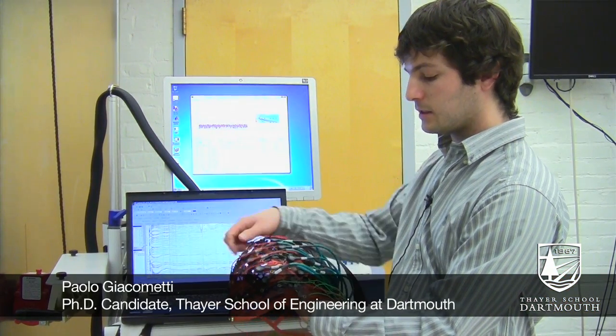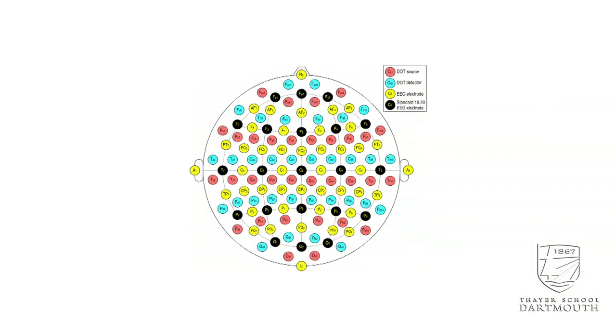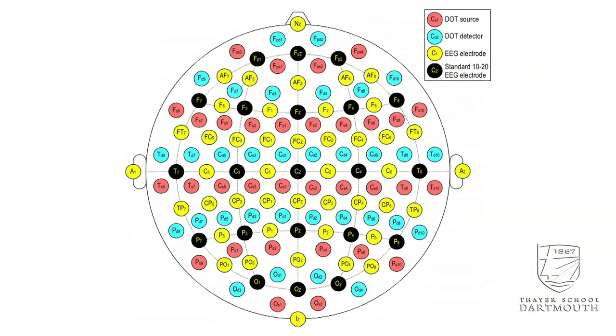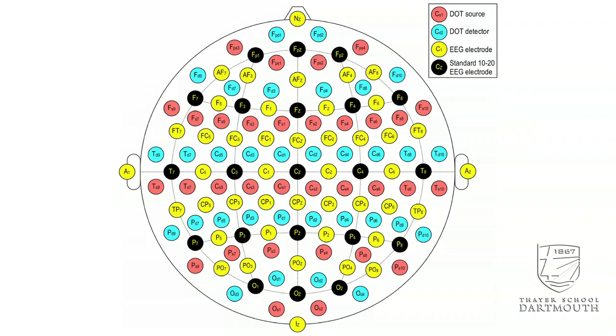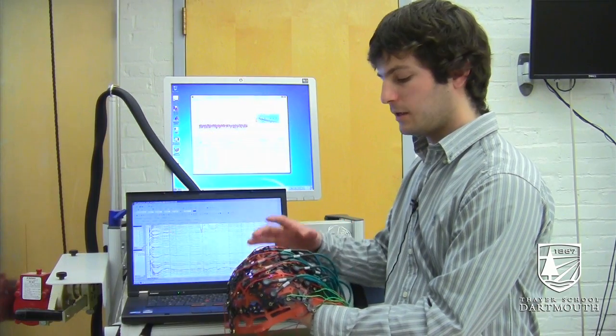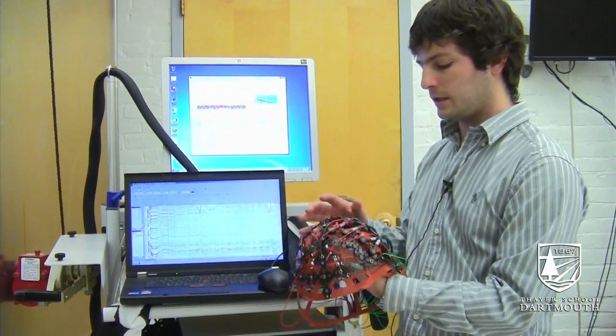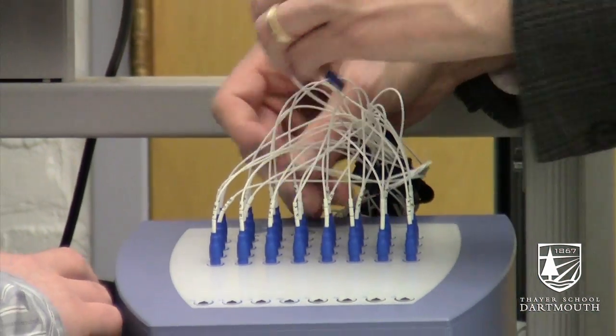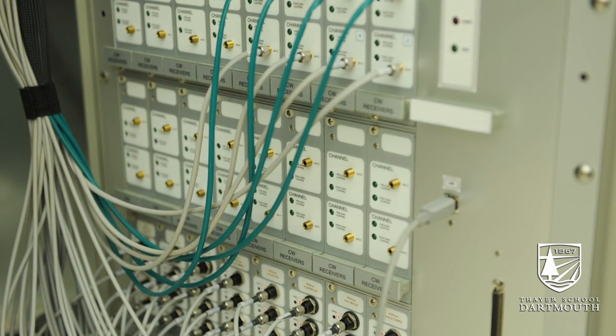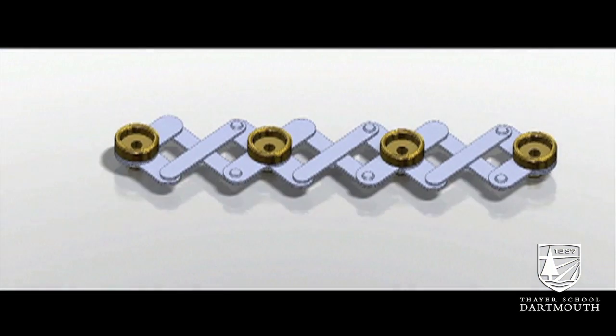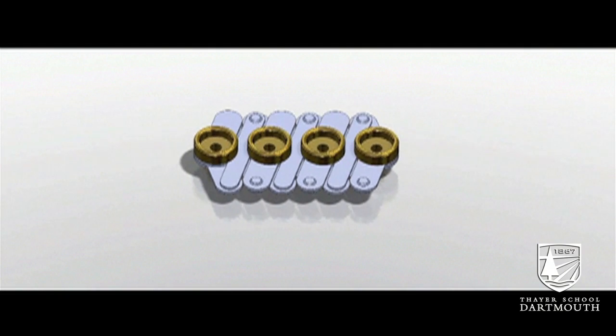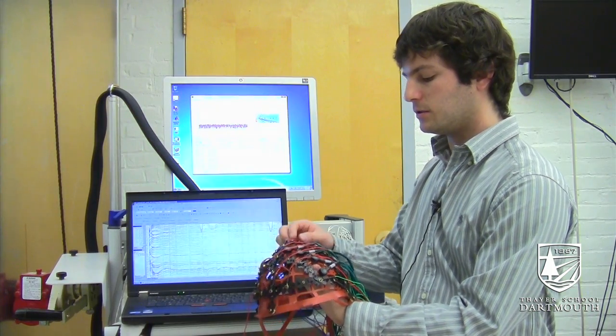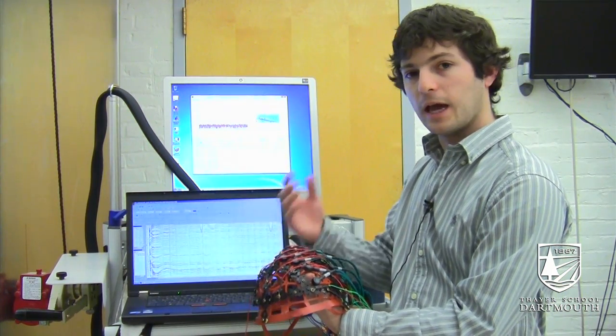What we have here is the Dartmouth probe. It has 65 electrodes that measure electrical activity coming from the brain and it has 64 optode positions that illuminate light into the head and detect it. The head probe is designed to be compatible with a wide variety of EEG systems and near-infrared spectroscopy systems. It is made out of these linkages that expand and contract to fit a wide variety of head sizes and shapes and it's very easy to fabricate, assemble, and use.